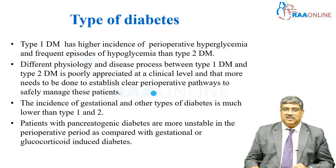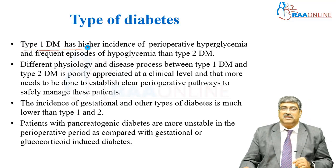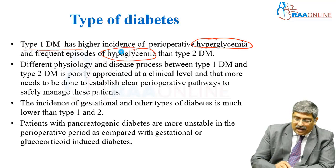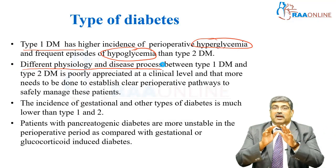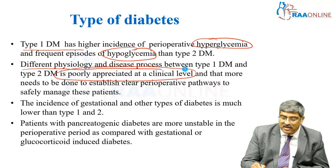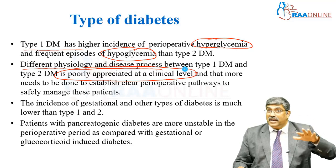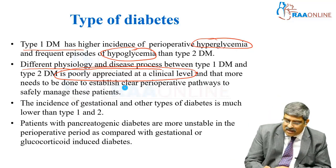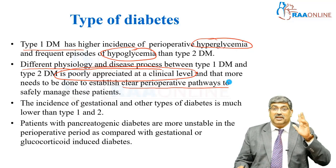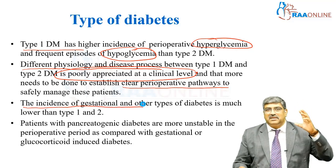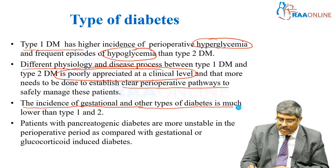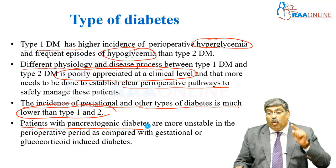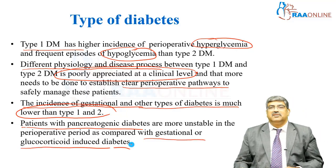Why these types of diabetes are very important: type 1, with absolute insulin deficiency, has a higher incidence of both hyperglycemia and hypoglycemia than type 2. The different physiology and disease process between type 1 and type 2 is poorly appreciated at the clinical level, which may have widespread implications in the perioperative period. You cannot treat type 1 and type 2 similarly in the perioperative period, so you must know the clear perioperative pathway to safely manage these patients. Pancreatogenic diabetes patients are more unstable perioperatively compared with gestational or steroid-induced diabetes.